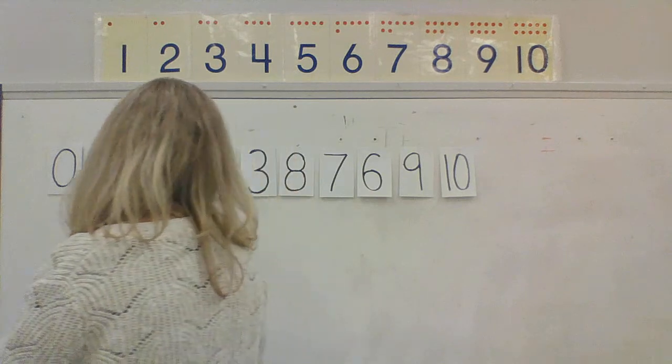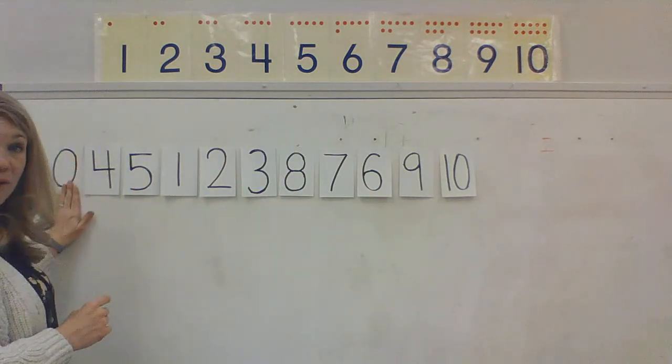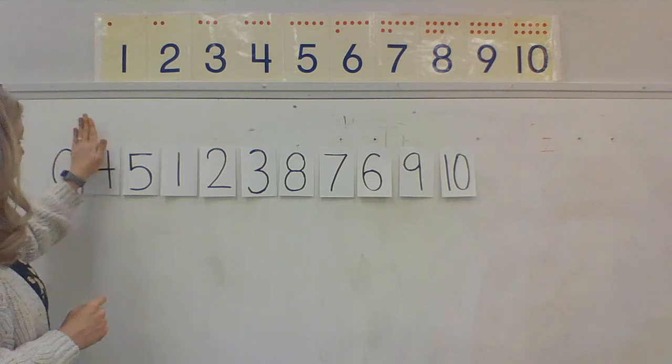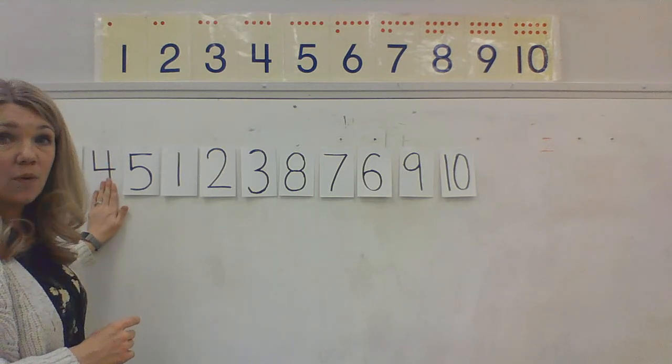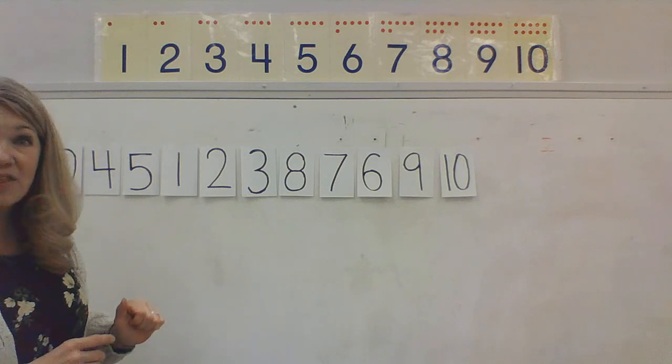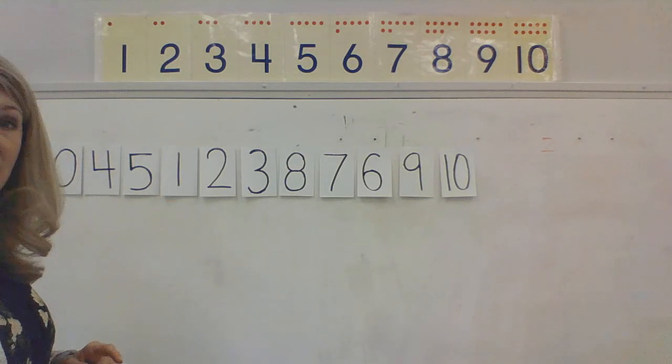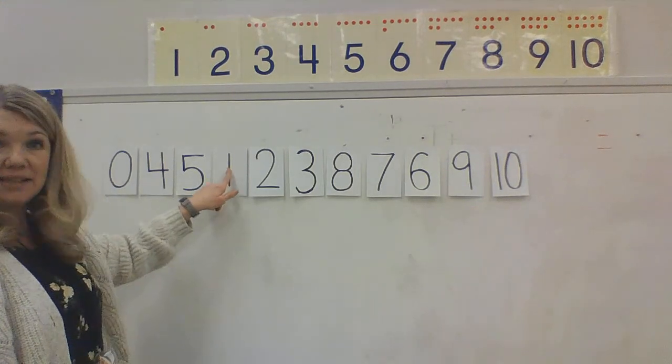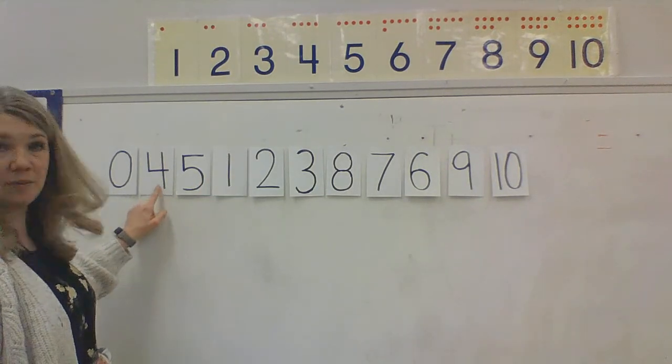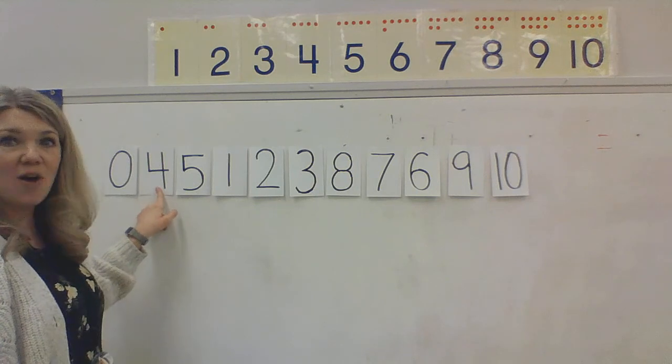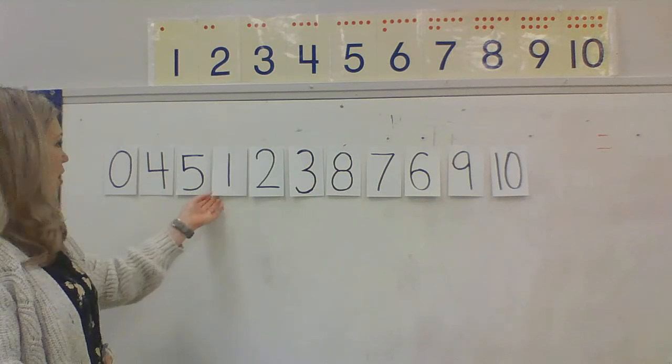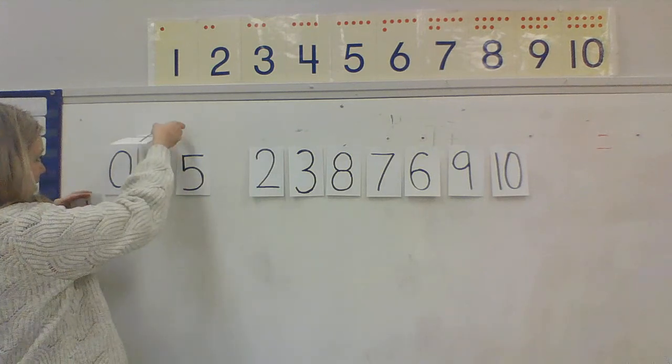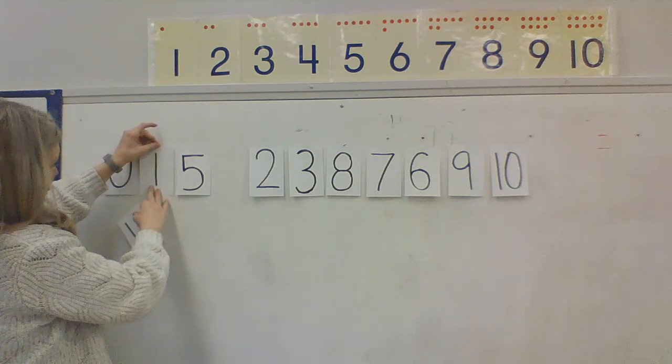So we're going to start over here with 0. 0 is the first number in our number line. That's right. But then after 0, we have the number 1. Do you see the number 1 anywhere on our number line? I see it right here. Is this the number 1? No. What number is it? The number 4. Okay, let's move our number 1 where it needs to be.